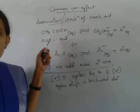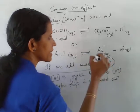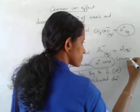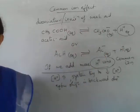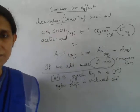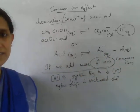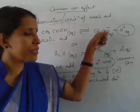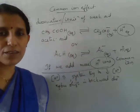This decrease in the dissociation of the acid is caused by the addition of H plus ion, which is already present in the equilibrium. So it is called a common ion — H plus ion is the common ion. The added H plus ion is common because it is already present in the equilibrium. This decrease in dissociation by adding a common ion is called the common ion effect, and it is a direct consequence of Le Chatelier's principle.